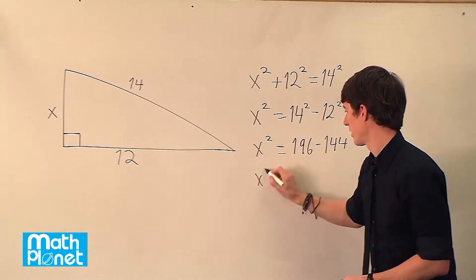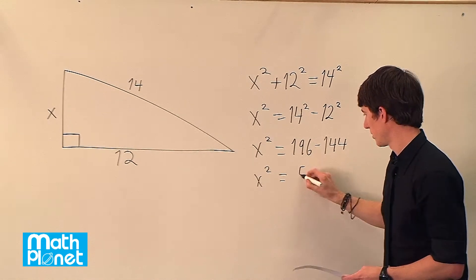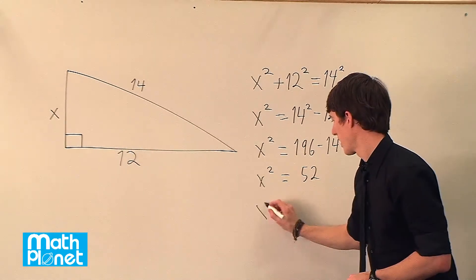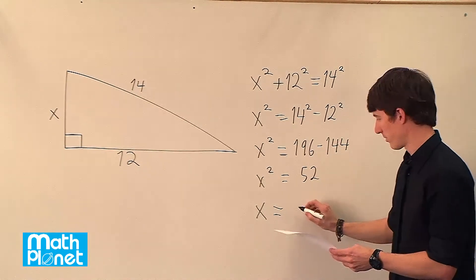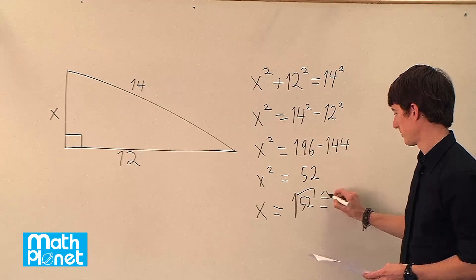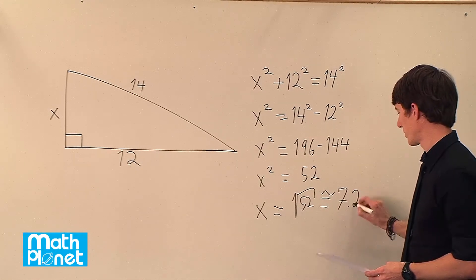This difference is x squared equals 52. And then we can take the square root of both sides to solve for x, finally. x equals positive root 52. And that's about 7.2.